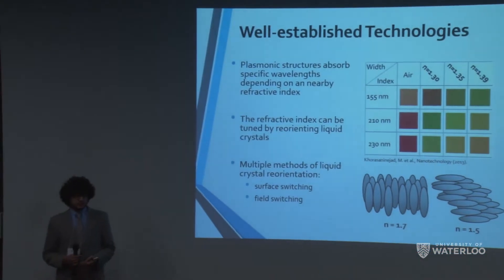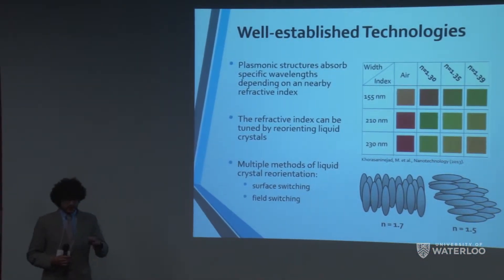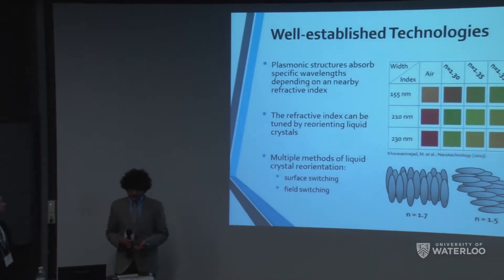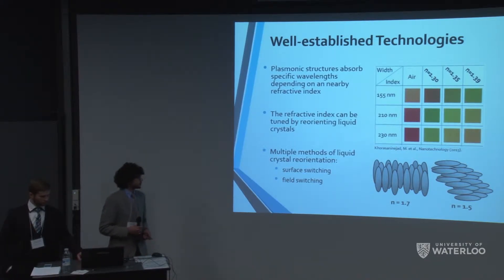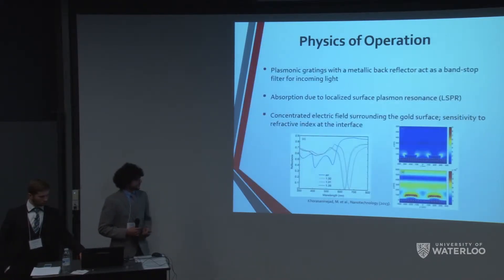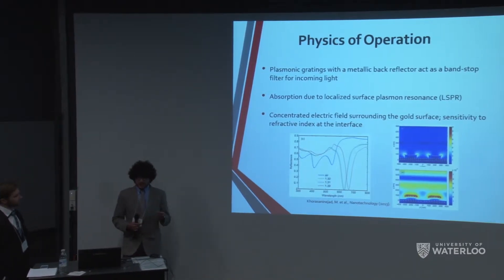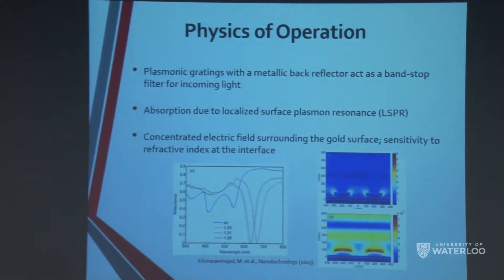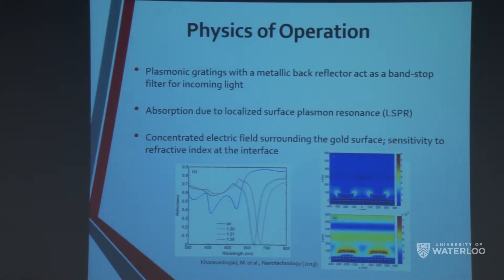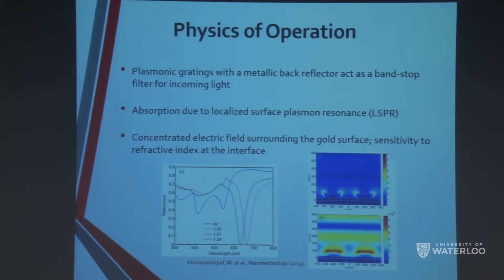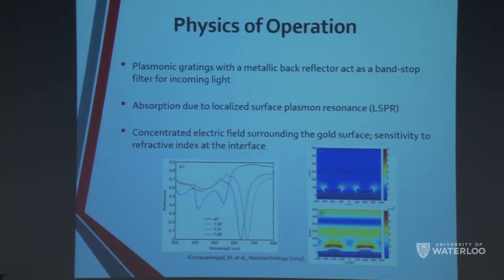One way to change refractive index is using liquid crystals. Liquid crystals, depending on their orientation, have different refractive indices, and we investigated two methods to change that orientation: surface switching and field switching. A plasmonic grating with a metallic back reflector acts as a band-stop filter — the plasmonic structures absorb light at specific frequencies and the rest is reflected back. The refractive index of the medium shifts the resonant frequency and therefore the reflected color.